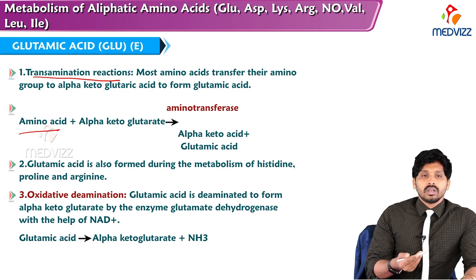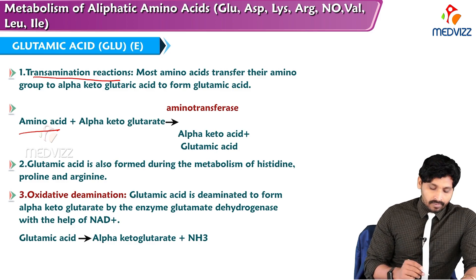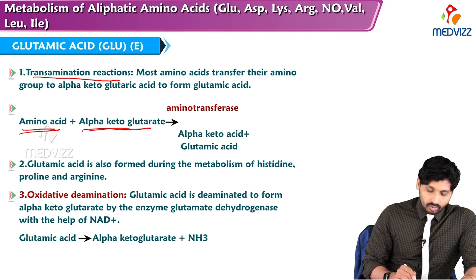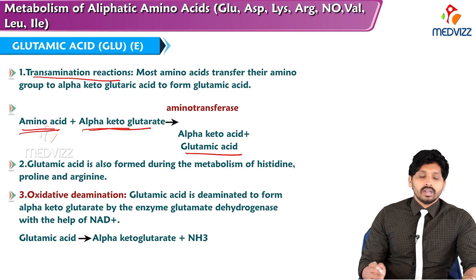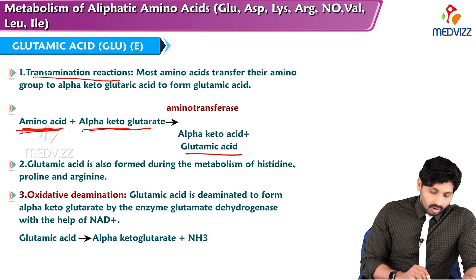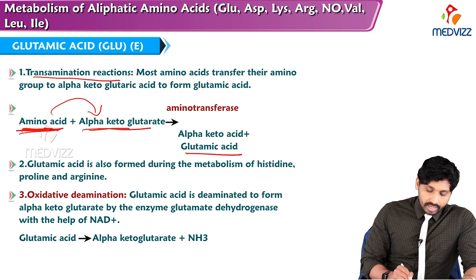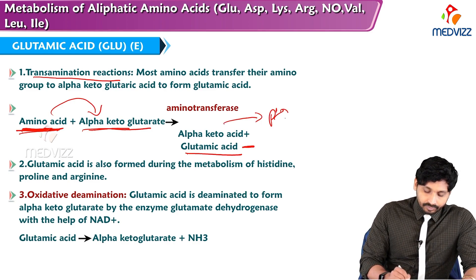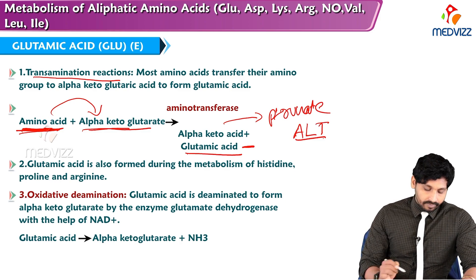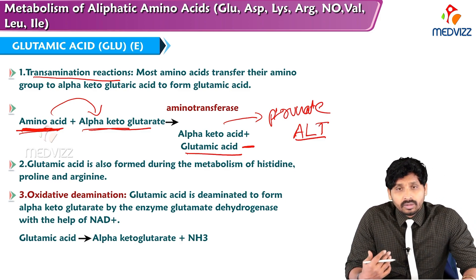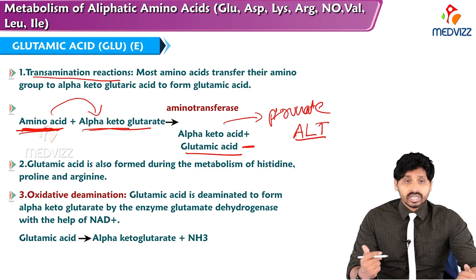For example, alanine and alpha-ketoglutarate undergo transamination to form glutamic acid and another keto acid — pyruvate in this case. The enzyme is alanine transaminase (ALT). Glutamic acid is also formed during the metabolism of histidine, proline, and arginine.